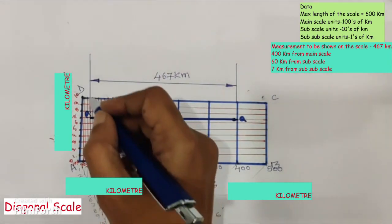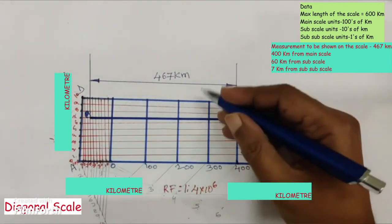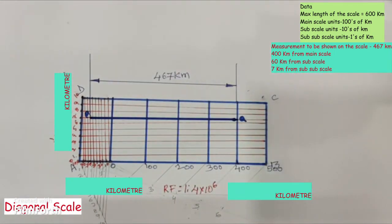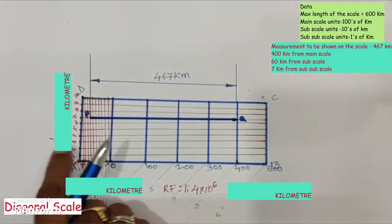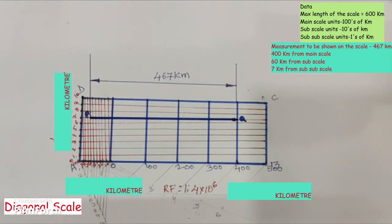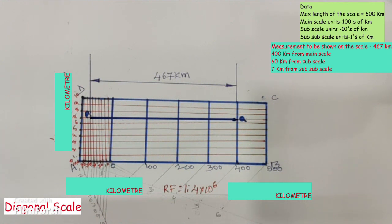Regarding pencil usage: the rectangle and perpendicular lines are drawn with an H pencil at 100% darkness, whereas the construction lines are drawn with a 3H pencil at 25% darkness. This problem is very important and has been asked many times in university examinations, so you need to practice it from beginning to end with perfection.